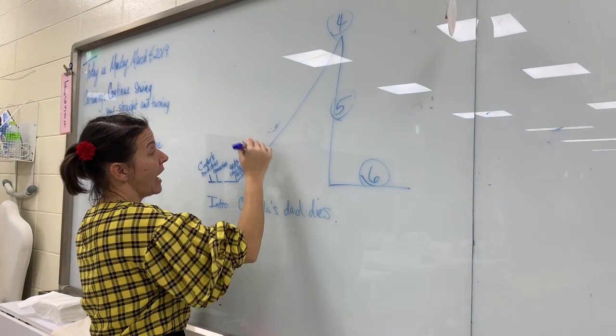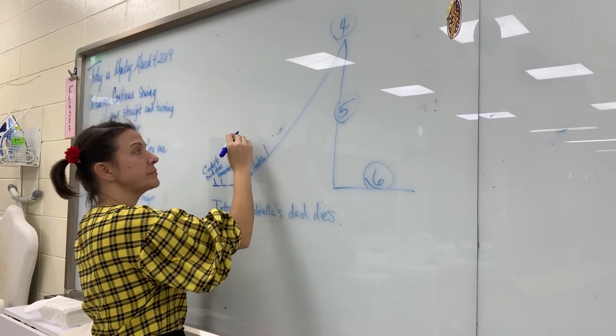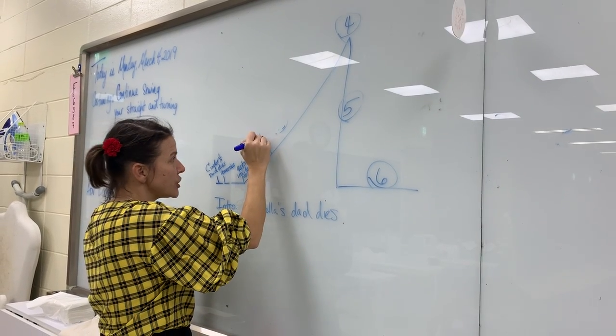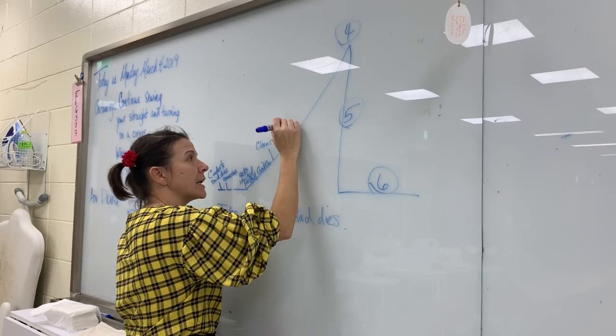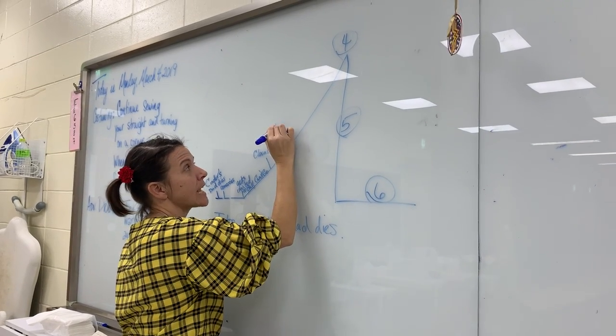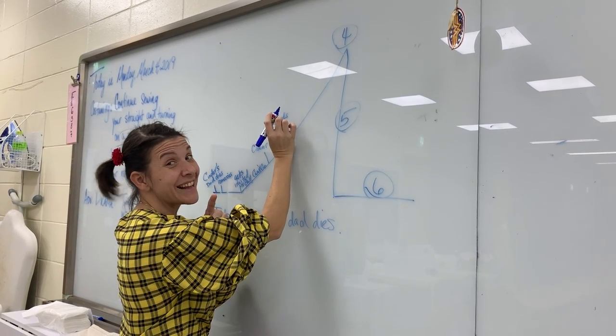You would continue up your plot structure. She cleans all the dishes, yada yada yada. Birds come and give her a dress. Yes, it's not like the Disney version. There's no mice making her dress.